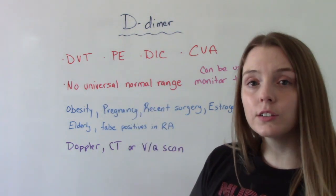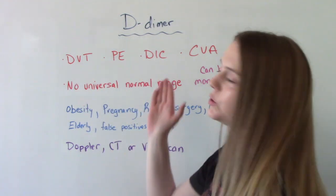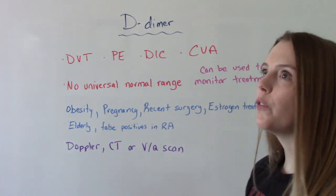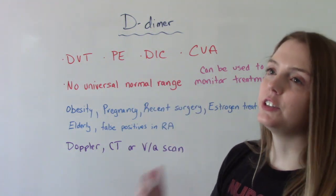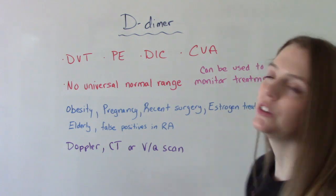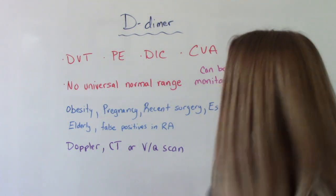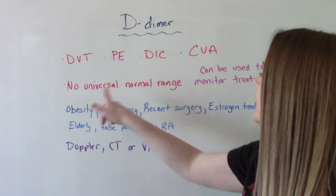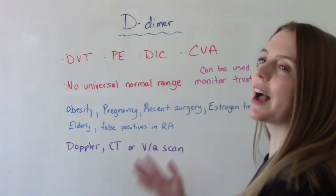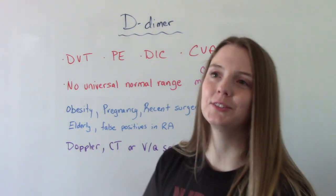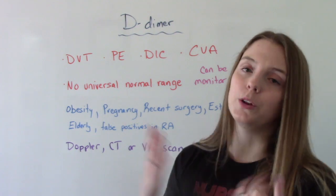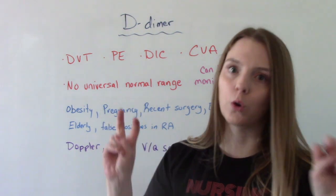This test can also be used after you've been diagnosed with a clotting disorder to help monitor treatment. For example, if your patient has DIC and their D-dimer levels are still elevated, that's letting you know the treatment isn't working as well. For this test, there is no universal normal range — which in a way is one less thing you have to memorize in nursing school. But it is something you need to pay attention to when you get your lab results, because there is no universal normal.